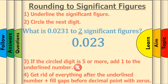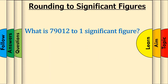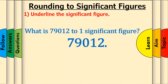What is 79,012 to 1 significant figure? As always, write down the number again, and since it doesn't already have a decimal point, stick one on at the end. Step 1: Underline the significant figure. Here, we want to round to 1 significant figure, so underline the first significant figure, which is 7.